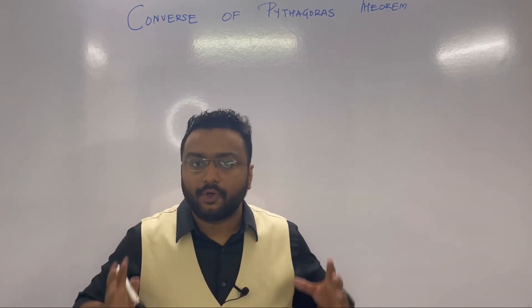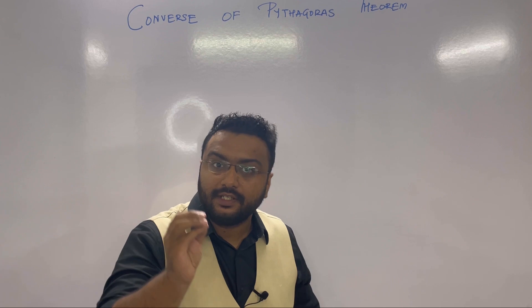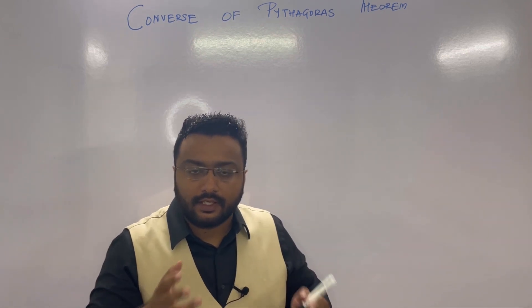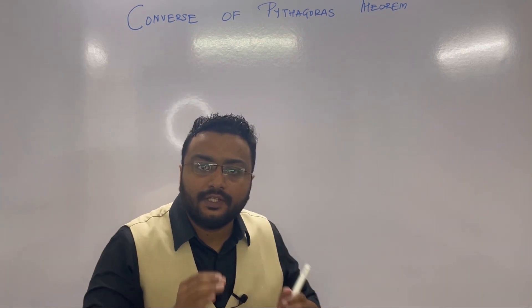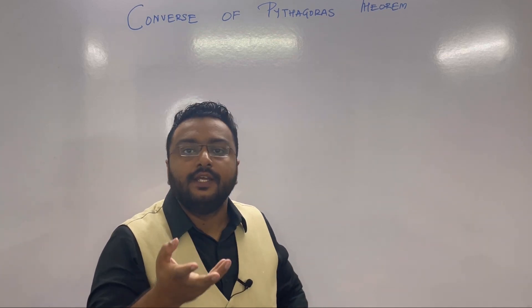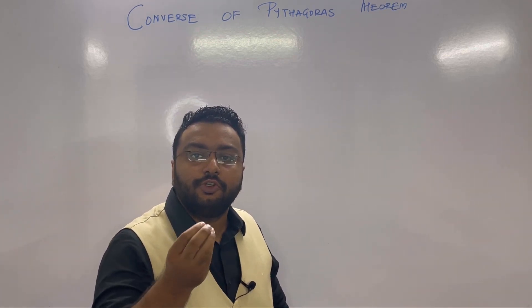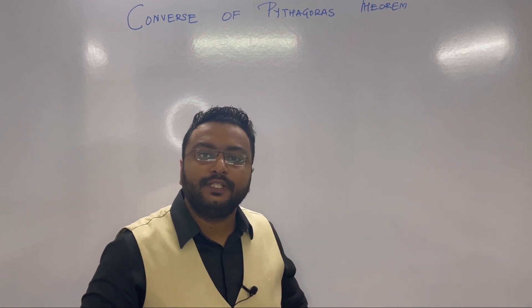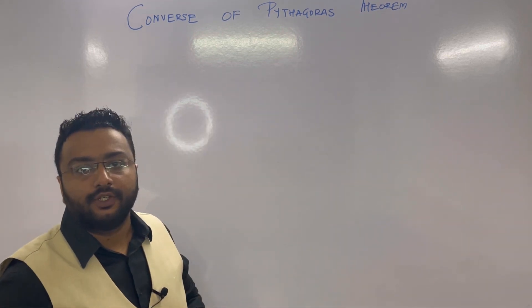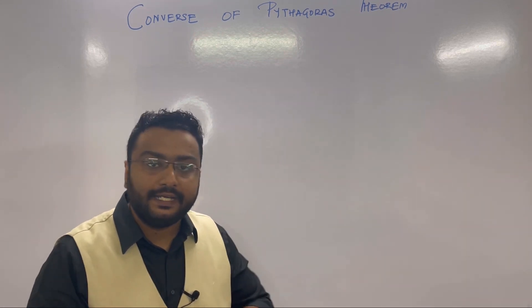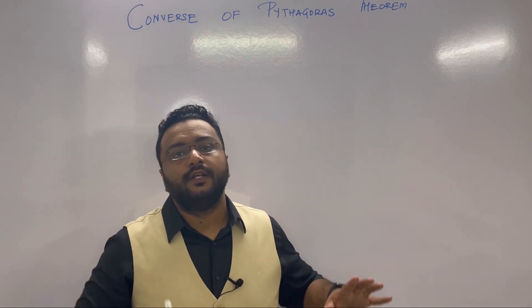Remember one very important thing: whenever in a question a right angle is given to us, use Pythagoras theorem. Whenever you need to prove any angle to be 90 degrees, use the converse of Pythagoras theorem. It's very simple - when 90° is given, use Pythagoras theorem; when you need to prove 90°, use converse of Pythagoras.